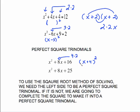So this is one I'd be able to continue by taking the square root of both sides. Now take a look at x squared plus 8x plus 25. 25 is a perfect square — square root of 25 is 5. But 5 times 2 is 10, which does not equal 8. So this is not a perfect square trinomial. To use the square root method of solving, we need the left side to be a perfect square trinomial. If it is not, we are going to do the completing the square process to make it one.